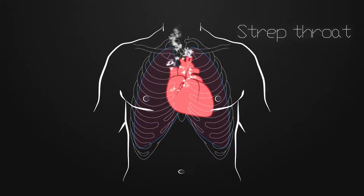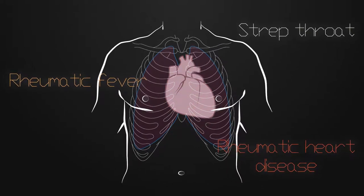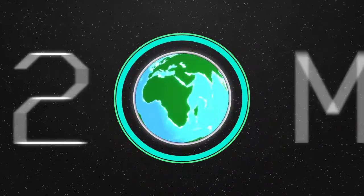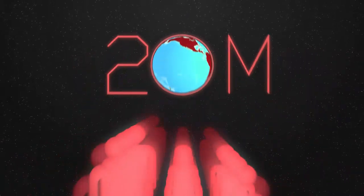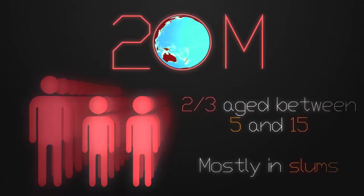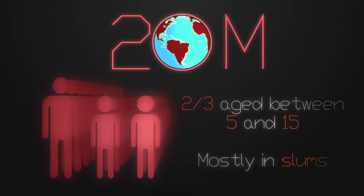Rheumatic heart disease is a sickness that develops from untreated strep throat. It affects 20 million people in the world, mostly children in slums where there are no doctors or equipment for proper screening.